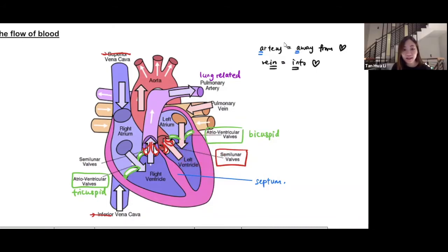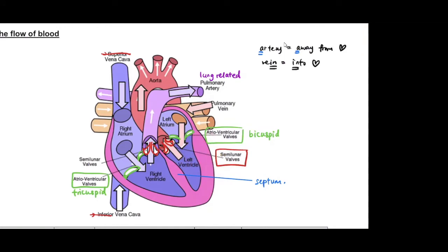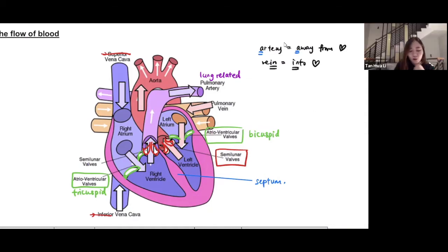Because the left ventricle pumps out blood to all parts of the body. Yes, very good. So the left ventricle needs to generate a higher force so that there will be a greater pressure so that the blood can reach all parts of the body through the aorta.